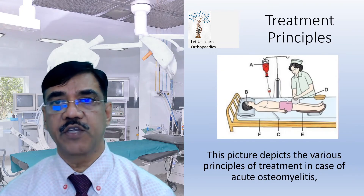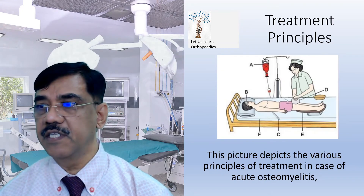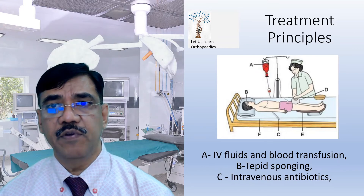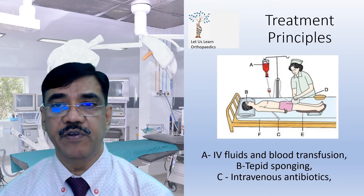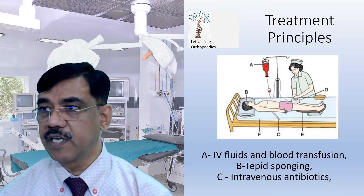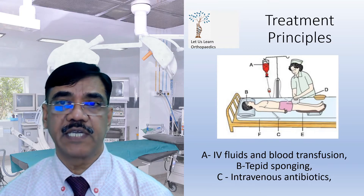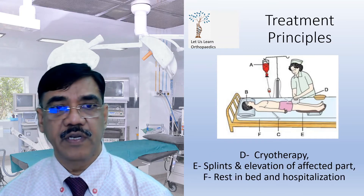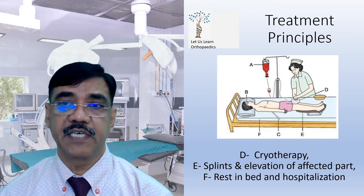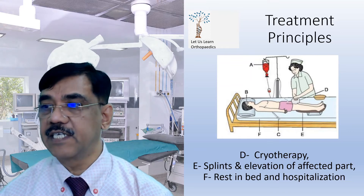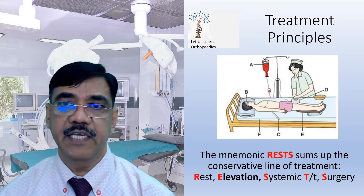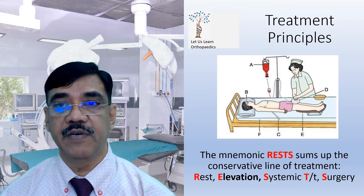The treatment principles in acute osteomyelitis are depicted in this diagram: A — IV fluids and blood transfusion; B — tepid heat sponging to manage fever; C — intravenous antibiotics to control infection; D — cryotherapy; E — splint and elevation of the affected part; and F — rest in bed and hospitalization. The mnemonic RESTS sums up the conservative line of treatment.